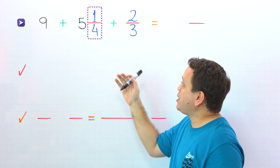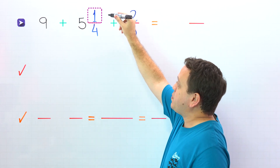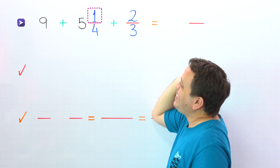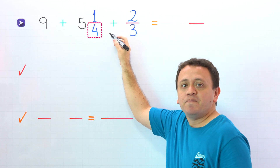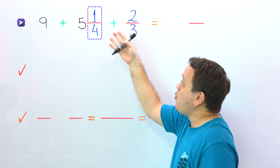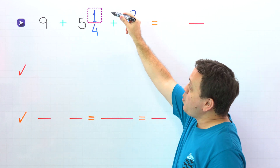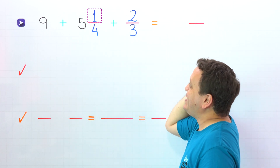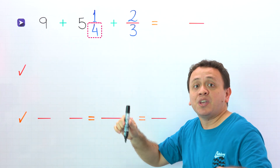Also, a proper fraction is a fraction where the numerator, the top number, is less than the denominator, the bottom number. For example, 1 fourth is a proper fraction, given that the numerator 1 is less than the denominator 4.